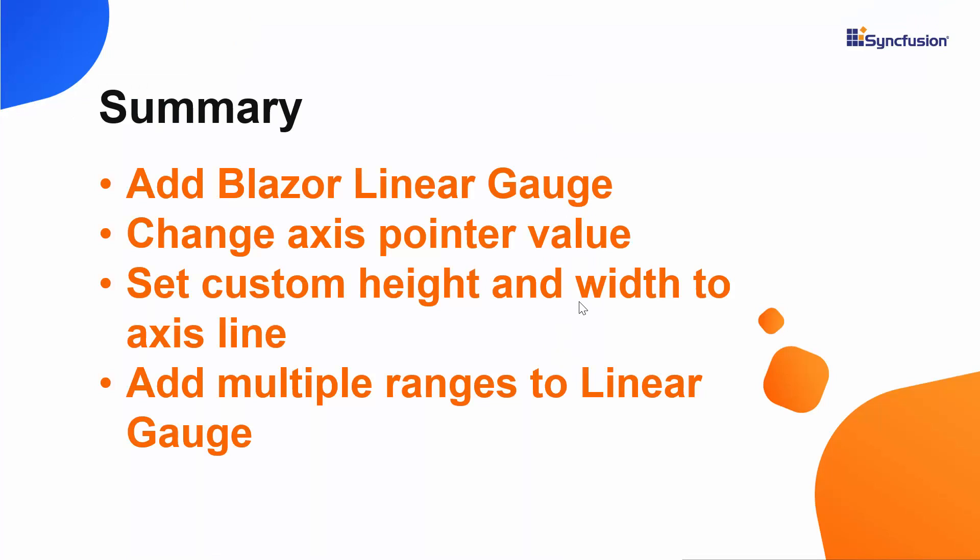Now let me make a quick recap of what we have seen so far. We have seen how to create a Blazor project using Visual Studio 2019 and added a Syncfusion Blazor LinearGauge component in the server app. We also saw how to change the axis pointer value, set custom height and width to the axis line, and how to add multiple ranges to the axis. You can download the example from the GitHub link in the description. You can also check if you're eligible for a free community license key. If you find this video useful, please click the like button and subscribe to our channel. Thanks for watching.